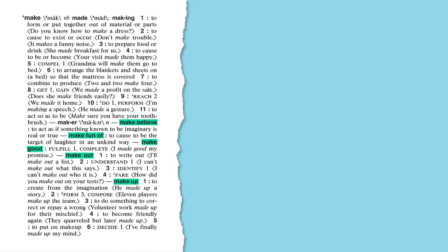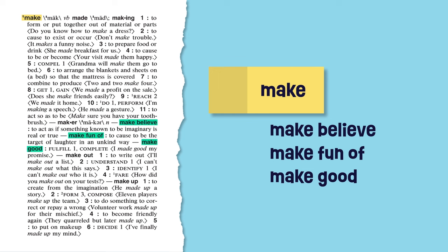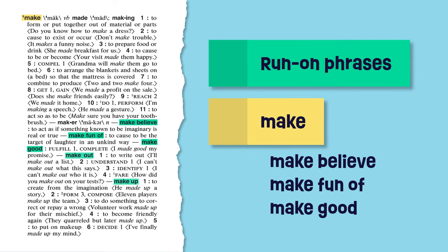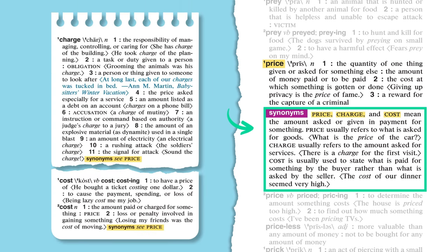Sometimes you'll find a phrase in dark, heavy type at the end of an entry. Here at make are make-believe, make fun of, and make good. These are called run-on phrases. The entry's headword is the first major word for this kind of phrase, but not necessarily the first word. Some entries have a paragraph about the synonyms of the word. Price, for example, has a synonym paragraph that helps explain the differences between the words price, charge, and cost, which all share a meaning. The word synonym in dark type at the entries for charge and cost direct you to the paragraph at price.